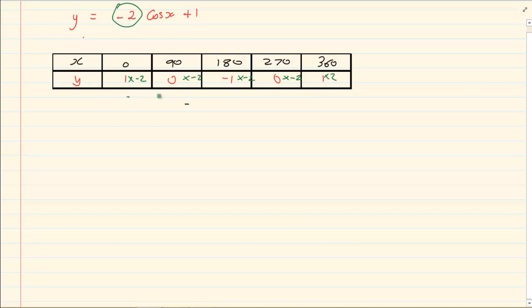So what do I have? Here I have minus 2, 0, positive 2, 0 and negative 2. Remember we are multiplying by negative 2 because the question states minus 2 cos x plus 1.